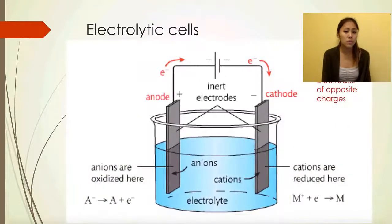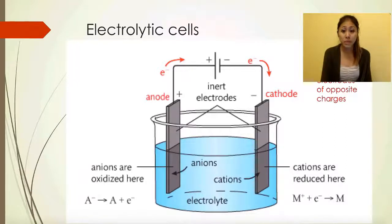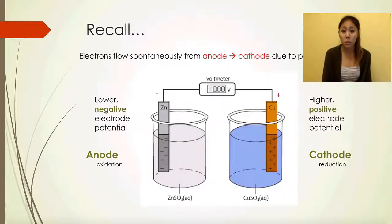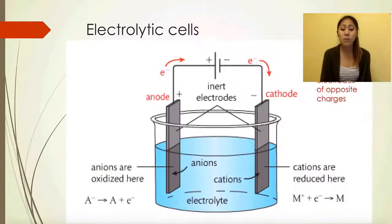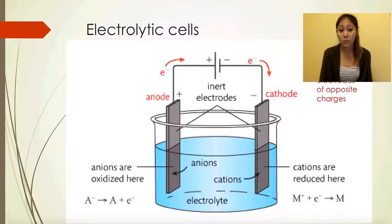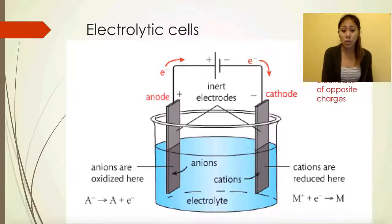Now, for electrolytic cells, notice the differences: there is no voltmeter anymore — the top is replaced by a DC supply of electricity. The electrodes are no longer separated into two beakers. Instead, both electrodes are in one beaker containing the molten salt we want to separate into its elemental forms. The two electrodes can be the same metal or simply graphite.